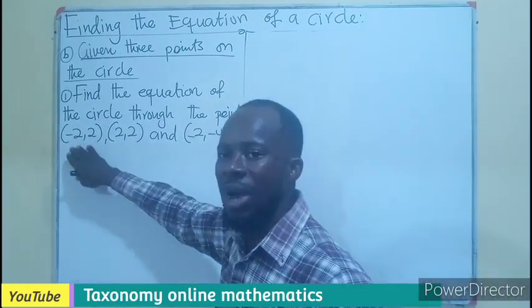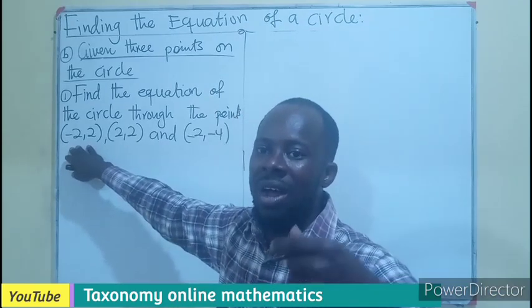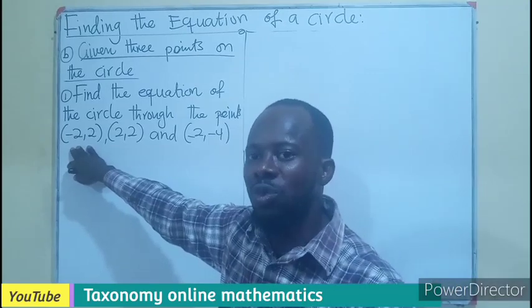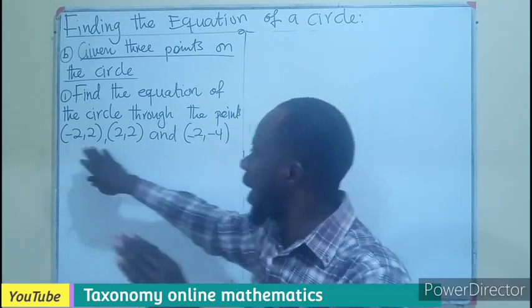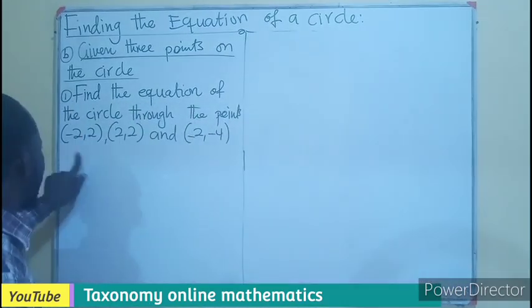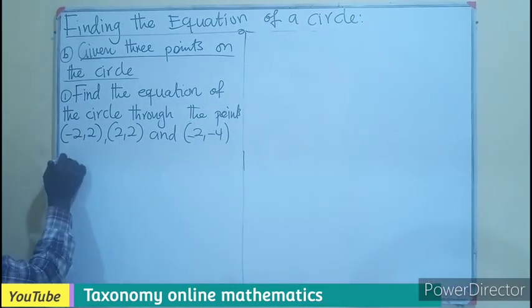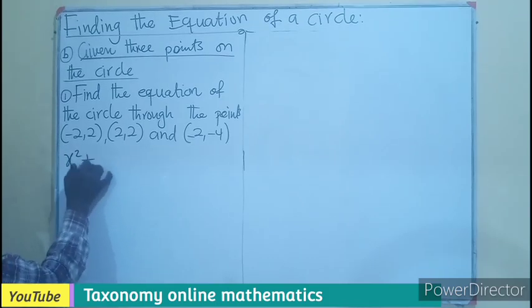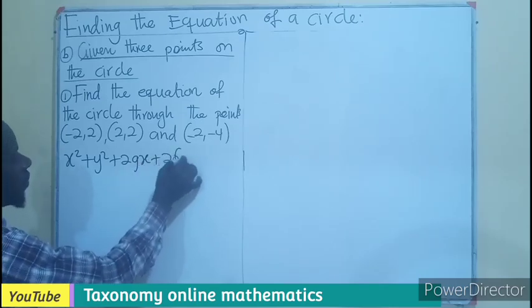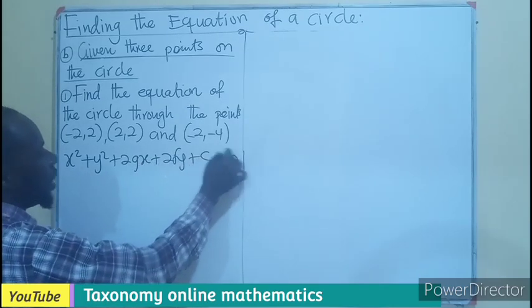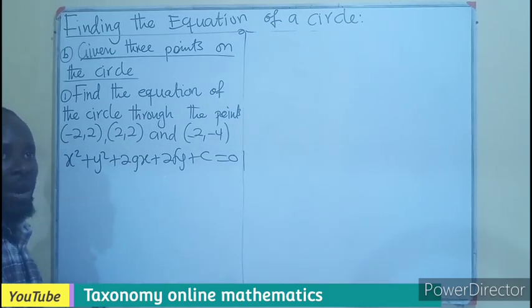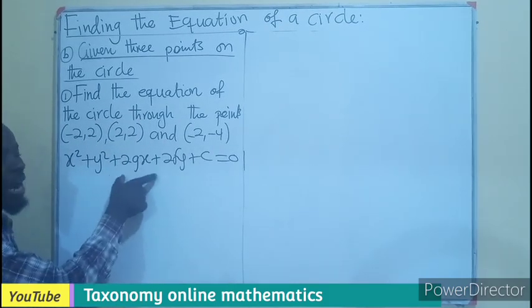Meaning if I put the first point into the general equation of a circle, the left hand side should be equal to the right hand side — likewise the second point and the third point. So we know that let the equation of a circle be x squared plus y squared plus 2gx plus 2fy plus c equals zero. We can use the other formula that gives rise to this also.